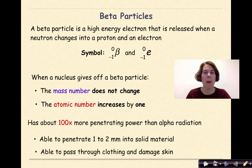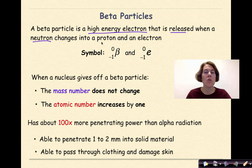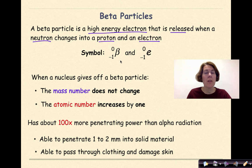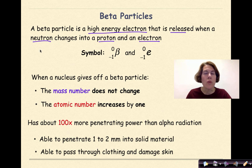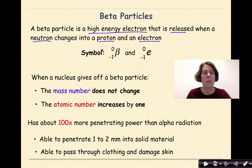A beta particle is a high energy electron that is released when a neutron changes into a proton and an electron. In the nucleus, some particles have the ability to change. When a beta particle is emitted, a neutron loses an electron, resulting in the formation of a proton. We'll talk about this more when we write out nuclear expressions.